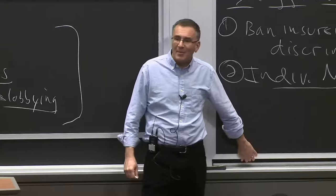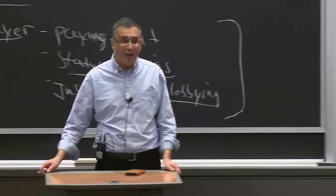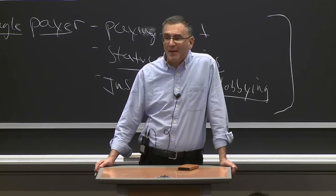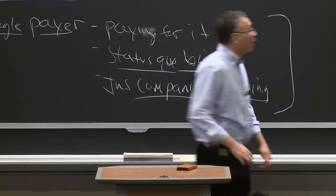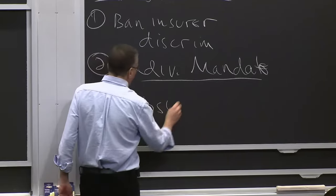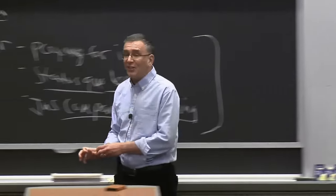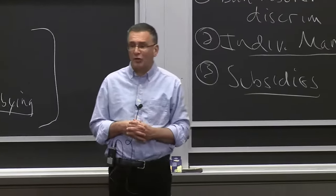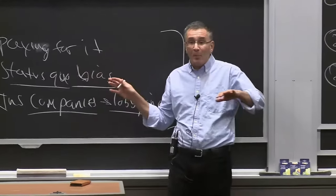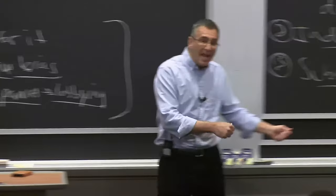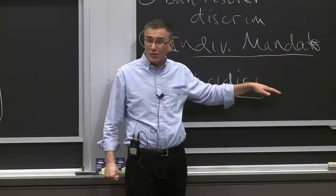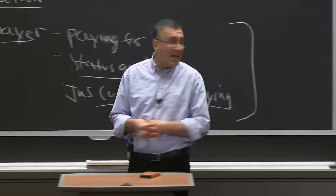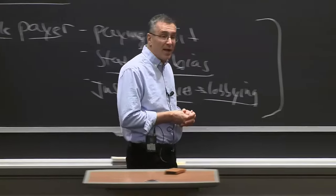So the third leg of the stool is subsidies to make health insurance affordable. If you're low income, we offset the cost of your insurance on an income-related basis. We don't have to pay for everyone's insurance like single payer — if you're happy with your employer coverage, keep it. But if you're low income and can't access the employer market, this gives you a new place to go. That idea became Romneycare here in Massachusetts and eventually the Affordable Care Act.